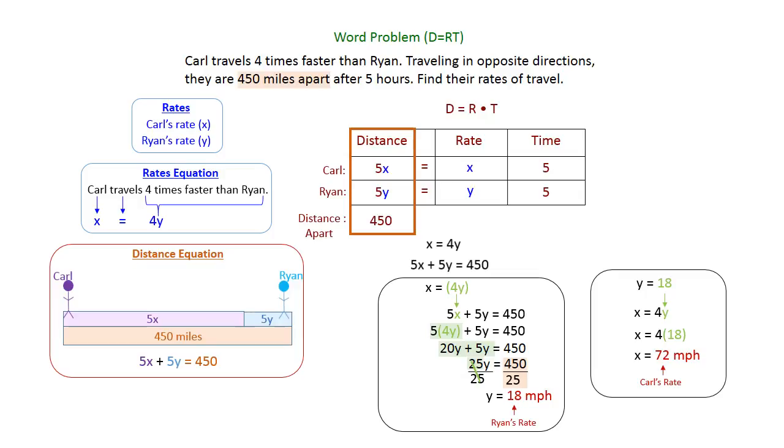And it makes sense - he's going faster, 4 times faster. When you do 72 times 5 and 18 times 5, and push them in opposite directions, they will be 450 miles apart. So we have solved this problem.